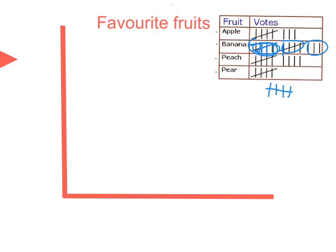So the tally marks make it easy to count by fives. If we tally those marks up, you can see apples had eight people, bananas was thirteen, peaches was nine, and pears was five. It's a really quick way to tally up all of the data.